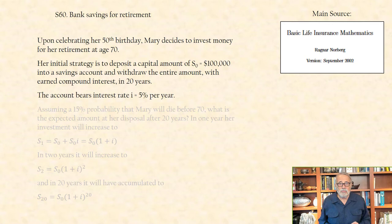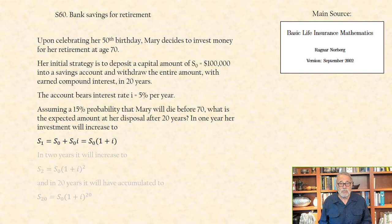The account bears interest of 5% per year. Assuming a 15% probability that Mary will die before age 70, what is the expected amount at her disposal after 20 years?